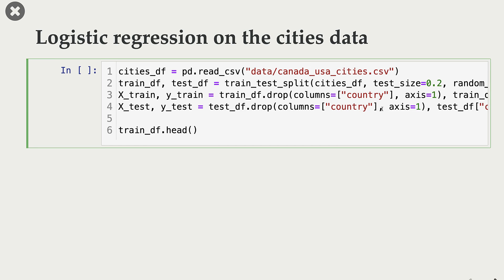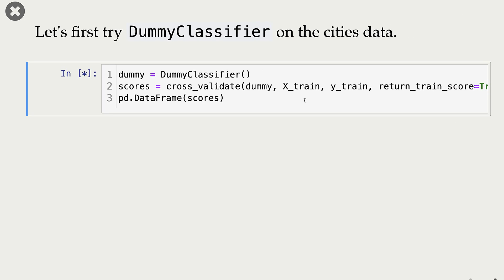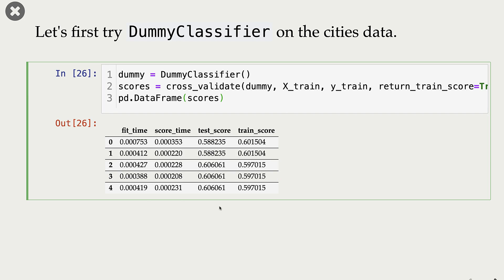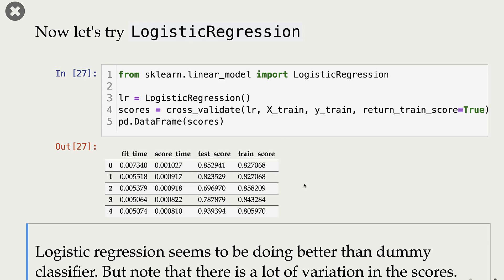Let's try logistic regression on our cities data — I'm using the cities data for easy visualization. In the cities data we have two features, longitude and latitude, and the target is country. This is a binary classification problem with two target values: Canada and USA. The task is to predict the country given longitude and latitude. Let's first try a dummy classifier on this dataset to get baseline train and validation scores, and then try logistic regression. You can import logistic regression from sklearn.linear_model. Creating a logistic regression object and passing it to cross-validate, here are our cross-validation results.